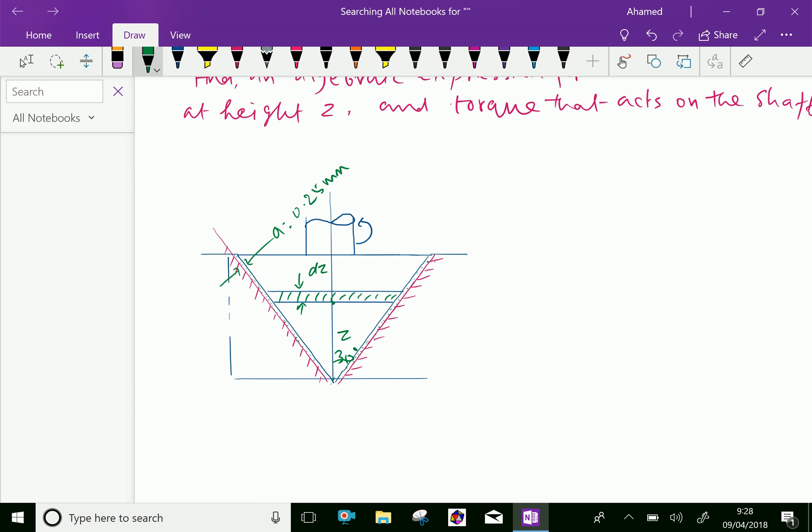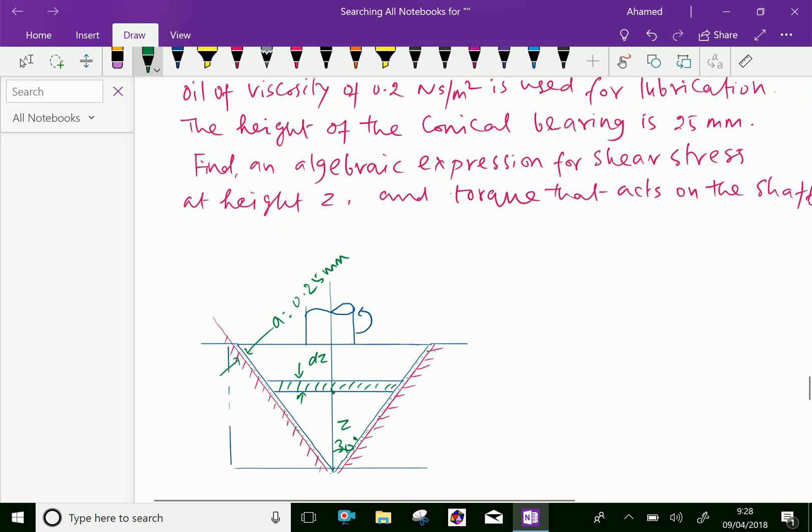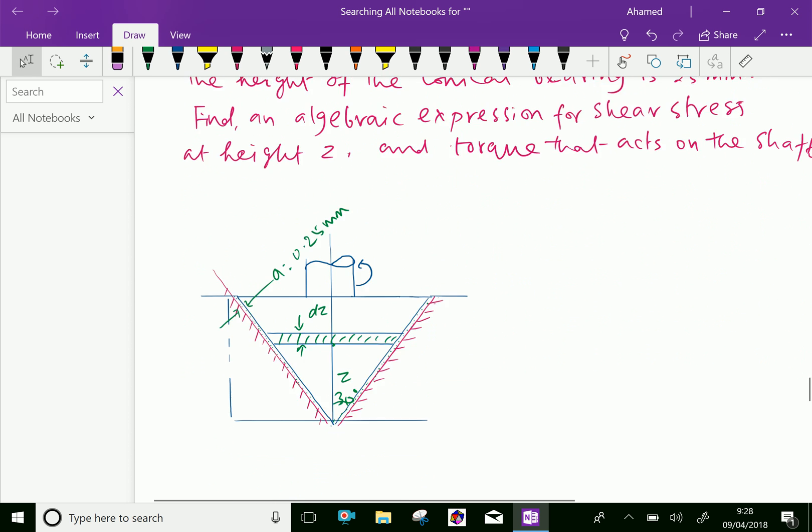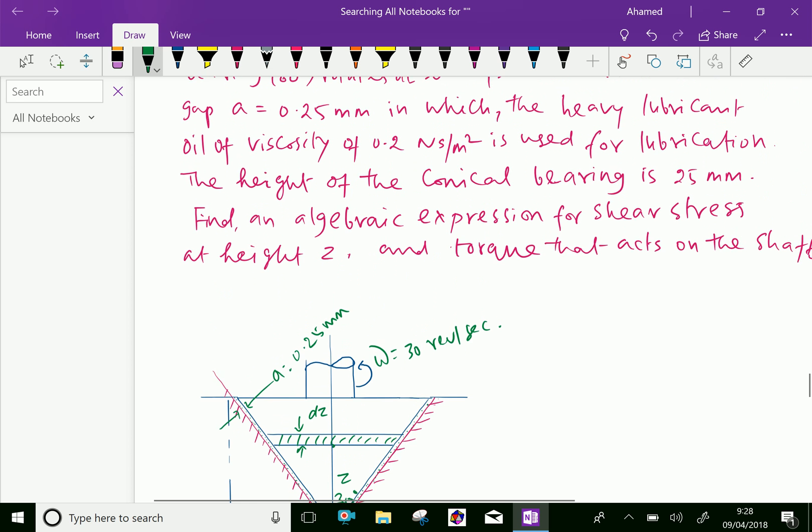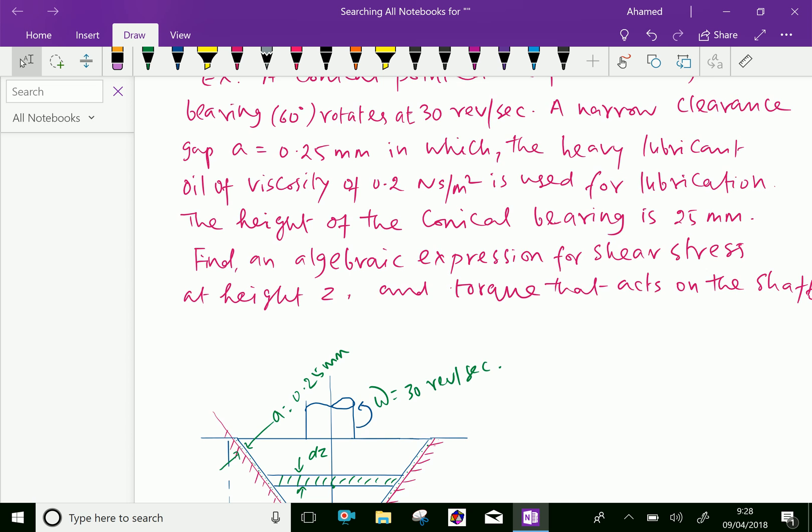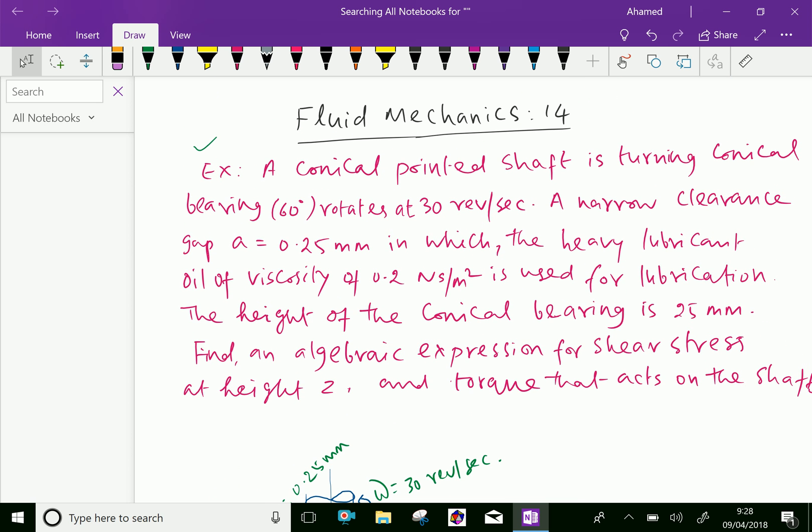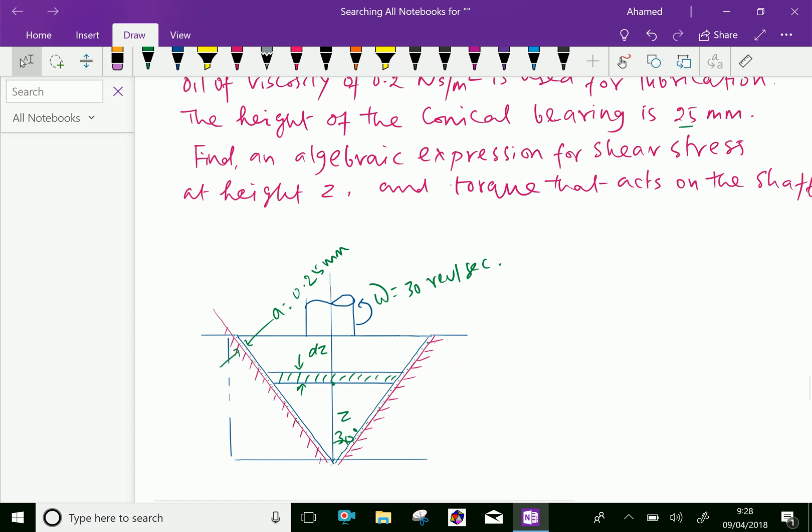Now, after that, the omega is 30 revolution per second. Then H of the bearing, height of the bearing is 25 mm. This height is H equal 25 mm. Now, let us start the problem.